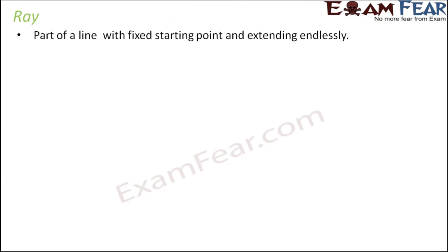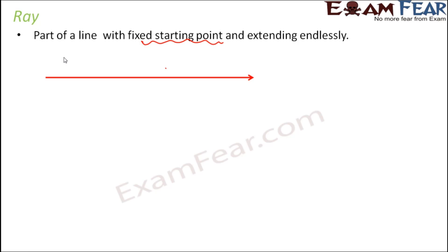Next is a ray. It is a part of a line with a fixed starting point and extending endlessly. A ray is also a part of a line, just like a line segment. But in this case, it has only one fixed starting point and it extends endlessly on the other side. When you represent a ray, one end is fixed but the other end extends infinitely. So it is like an intermediate between a line and a line segment: a line extends in both directions, a line segment has both fixed points, and a ray has one fixed point and one side extending infinitely.